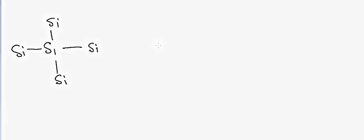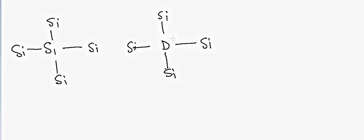If we dope silicon with something which has an extra electron — for example, we need four electrons for bonds on all four sides — so if we use something which has five electrons in the outer orbital, then we will have one extra electron. This is what we call doping. In this case we have all four sides occupied and then there is a free electron where you dope the material. This is called an n-type semiconductor.